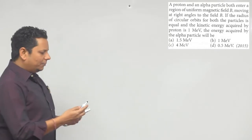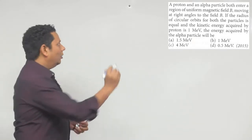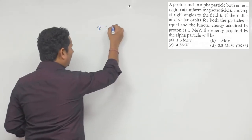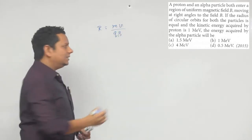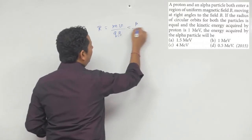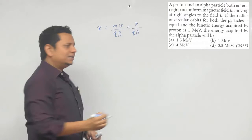Aapko ye baat pata hai ke koi bhi charged particle jab magnetic field mein enter karta hai, uska radius r hum log likhte hain mv/qB. Yeh aapko formula revise karna ho. Isi cheez ko hum yahan pe likh sakte hain p/qB, where p is momentum.